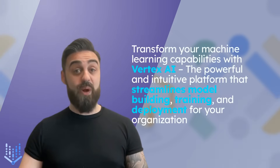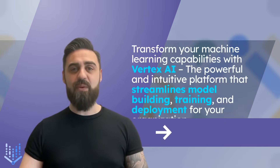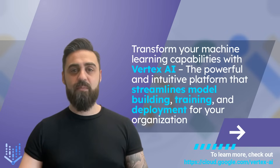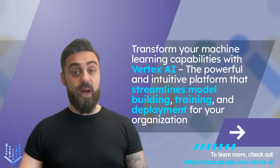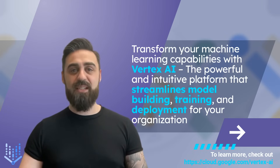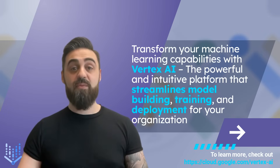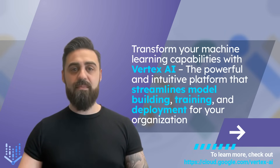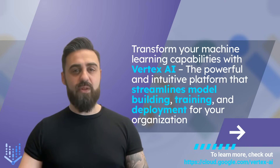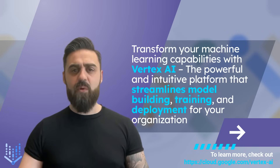Optimize for performance. When deploying machine learning models, it's important to optimize them for performance. This can involve techniques such as pruning, quantization, and compression, which can help reduce the size of the model and improve its accuracy. Vertex AI offers a range of tools that allow you to optimize your models for performance, including the ability to automatically optimize your model during training. Monitor your models. Once you've deployed your machine learning models, it's important to monitor them closely to ensure they continue to perform well. Vertex AI offers a range of monitoring and logging tools that allow you to track key performance metrics and detect issues before they become critical. By monitoring your models regularly, you can ensure they continue to deliver high-quality results over time.